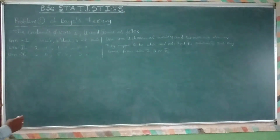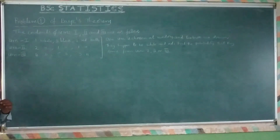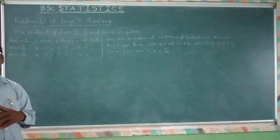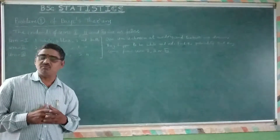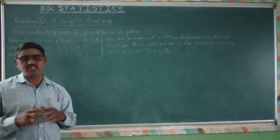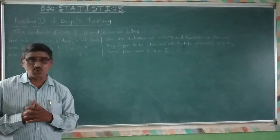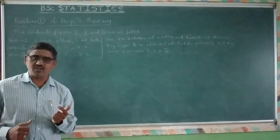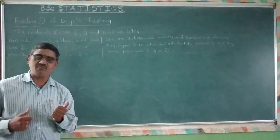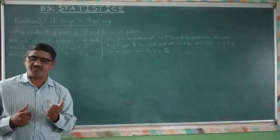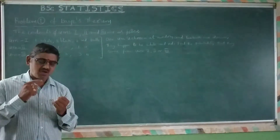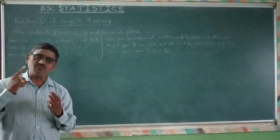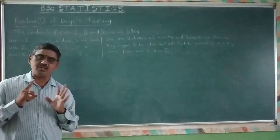Now, to identify and calculate the probabilities of Bayes' theorem, you have to calculate six probabilities. What are those? E1, E2, E3 — we have to identify. And event A — we have to identify. That is six probabilities: probability of E1, E2, E3, and probability of A given E1, A given E2, A given E3.